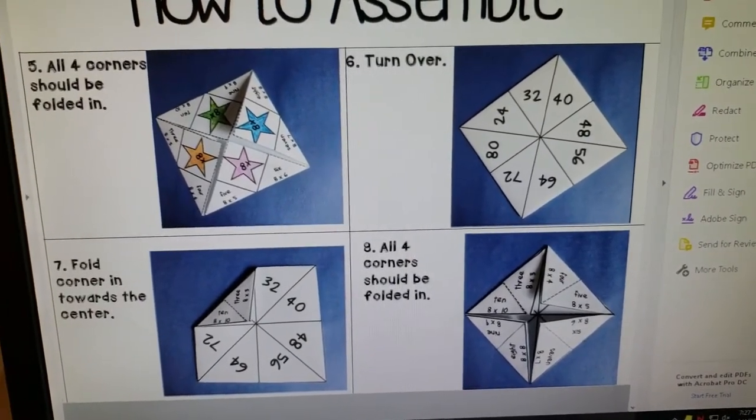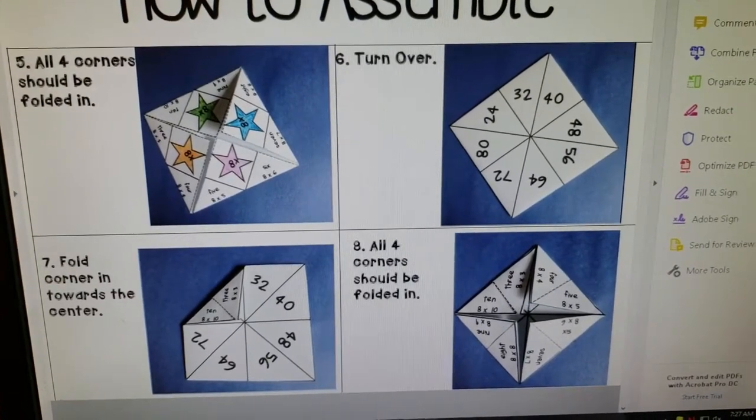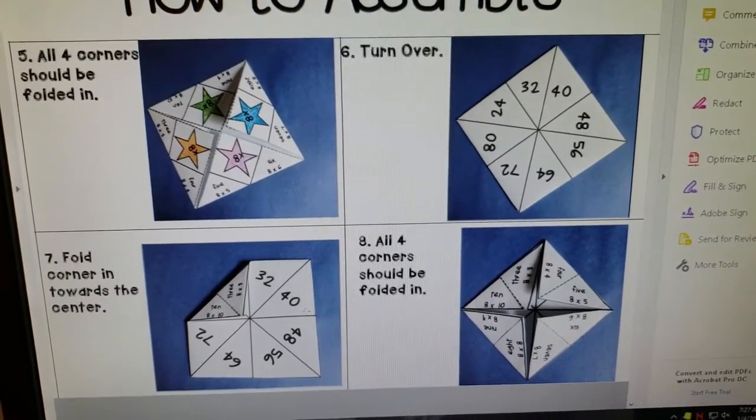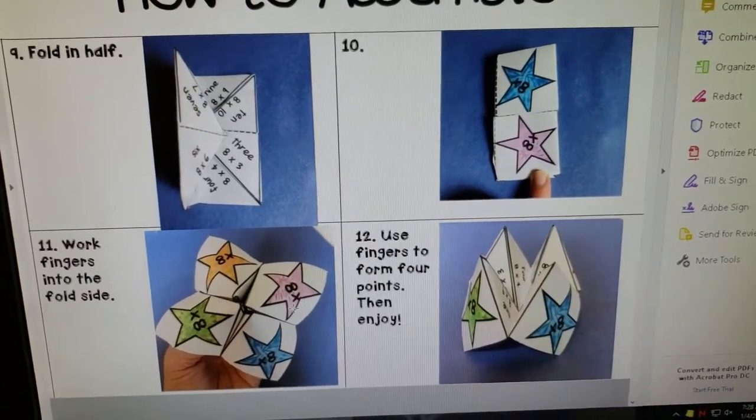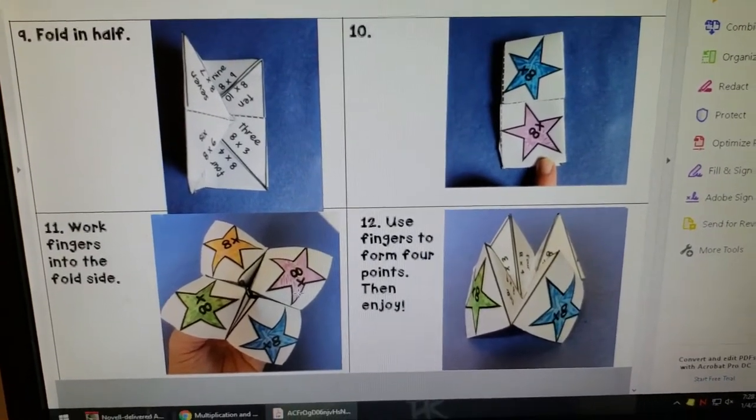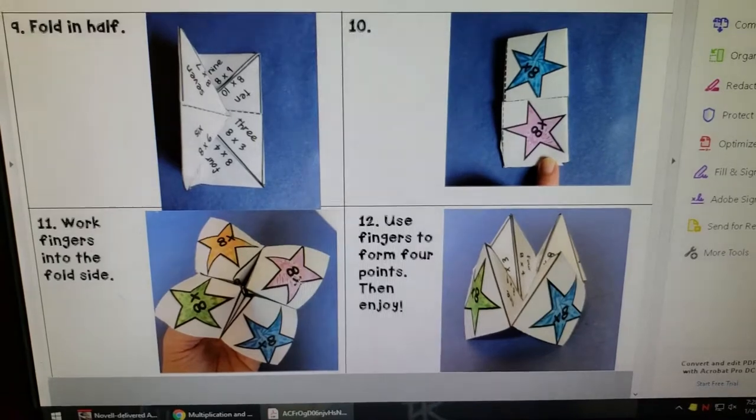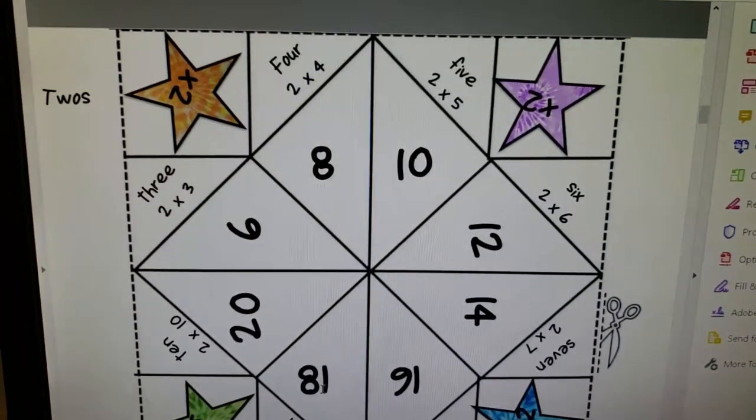All four corners are folded in. In the bottom corner, you have your problems, and then they pull them up and they have the answers. Again, this is like the old fortune tellers that we used to use back in school. This is a really cool activity and way to showcase this information. This here, the colored version, kind of shows you exactly what to do, where to cut out, so that you guys can actually see this in action.